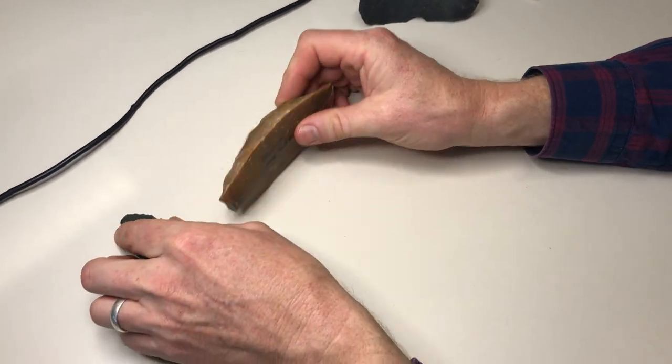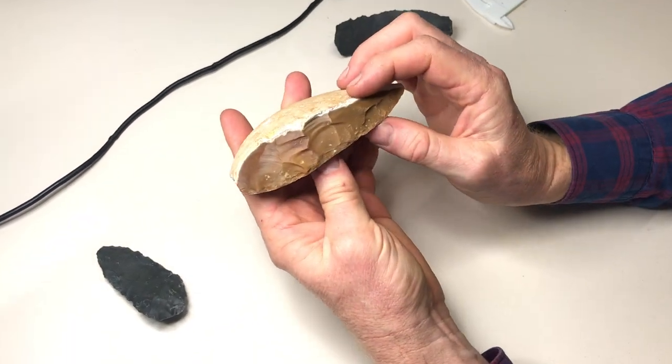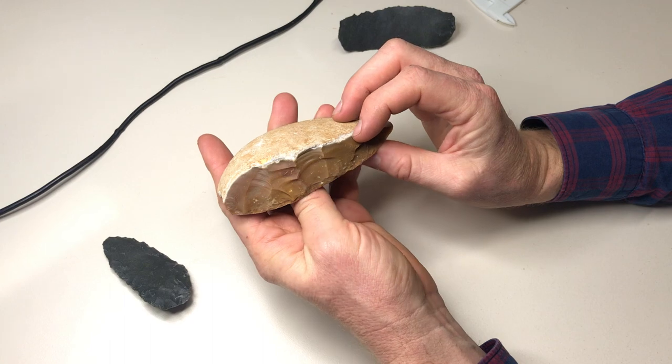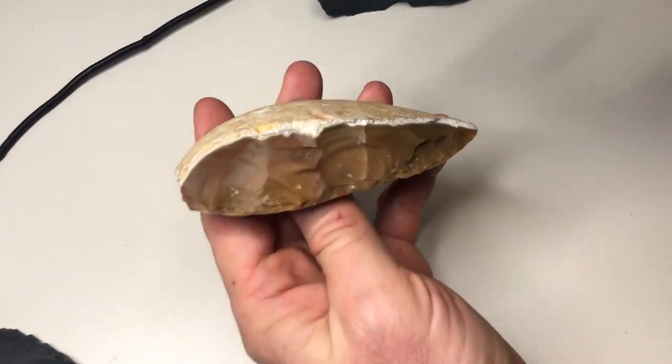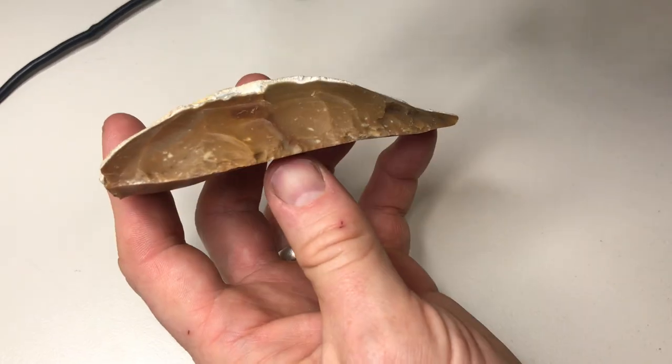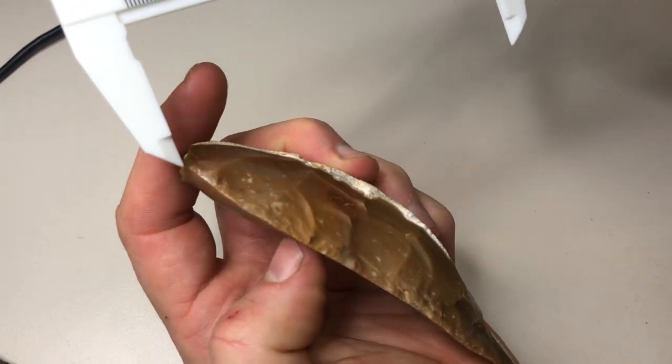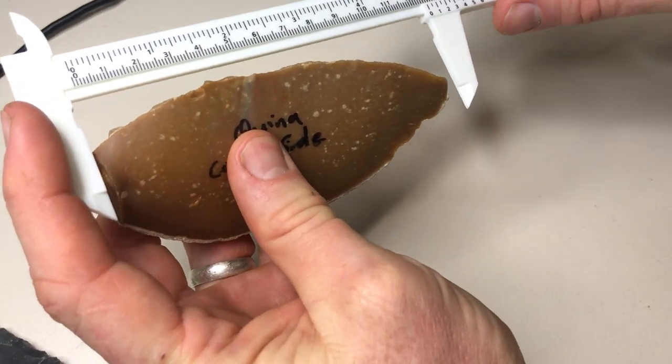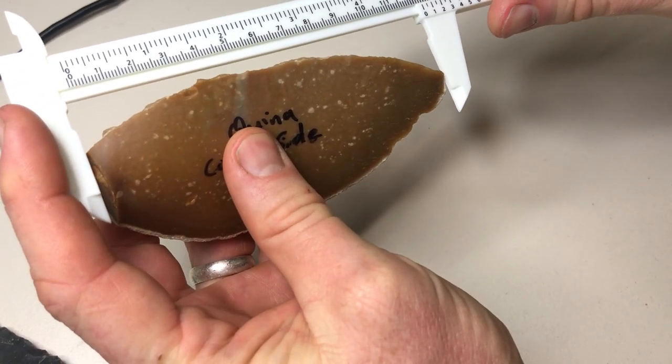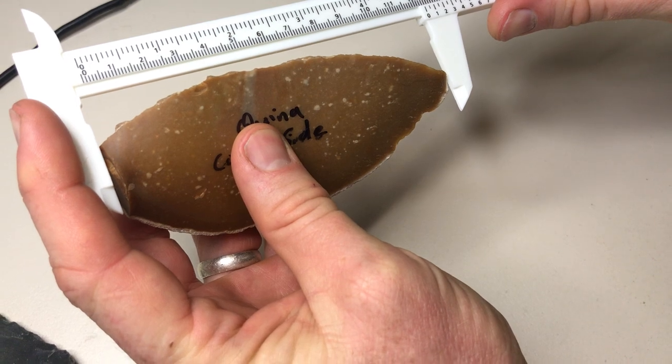The next thing that you're going to be measuring is the length of retouch. So if we look at our scraper here, our unifacial scraper, it's very easy to measure our length of retouch on this one because it basically runs the entire length of that edge. So it goes from right here all the way down to this end here, so we're simply going to measure the length of that retouch. Here it's 125 millimeters.